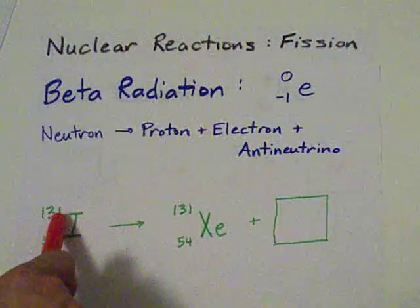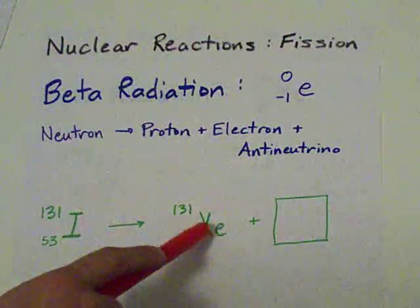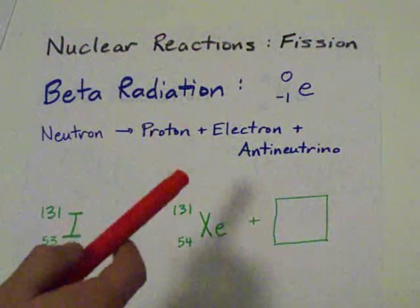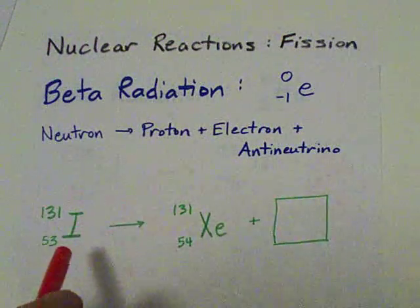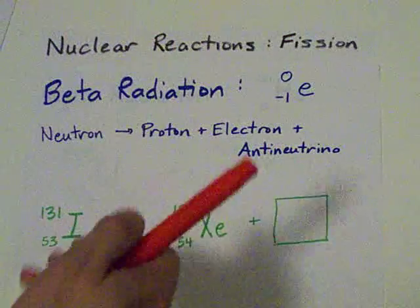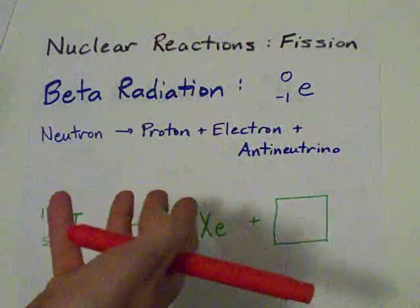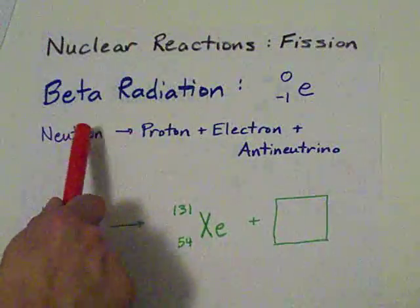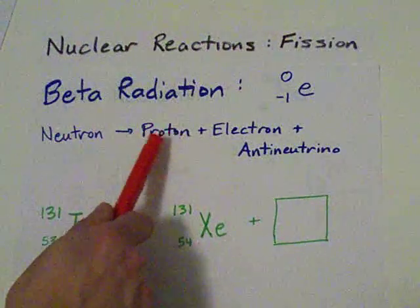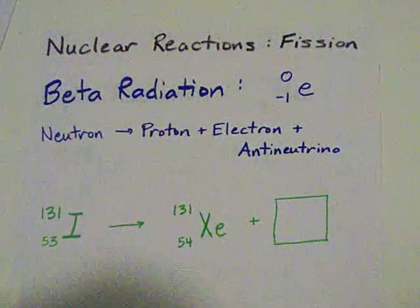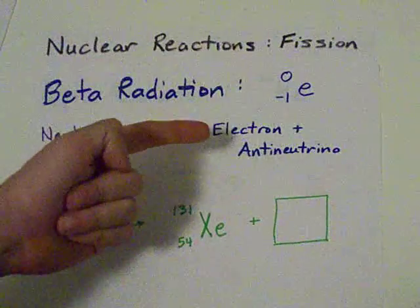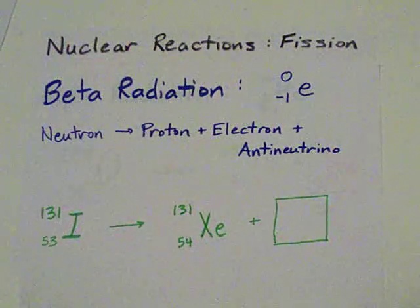When iodine-131 breaks apart and gives you xenon-131, you look at that and you're like, wait a second. The number of protons went up. How is the number of protons going to go up? The answer is, one of the neutrons broke apart and gave you an extra proton. But for that to happen, you need to eject an electron.